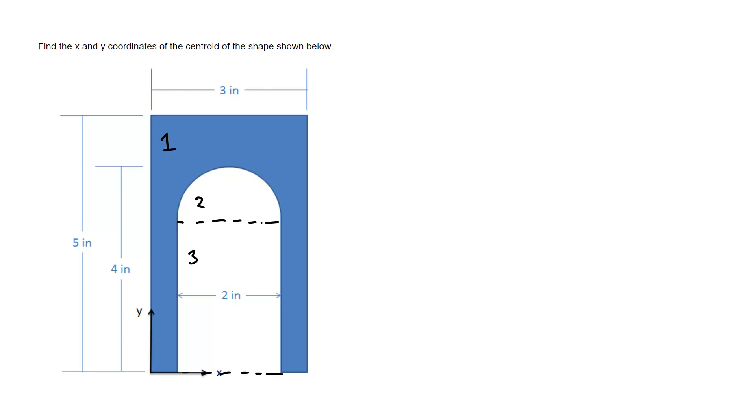This semicircle here, if the diameter is 2 inches that means the radius is 1 inch. Then the height of this rectangle, if this is 4 to the top and it's got a radius of 1 inch, the rectangle over here is going to be 3 inches overall that way.